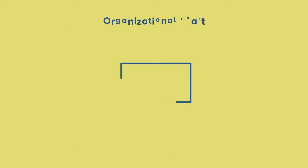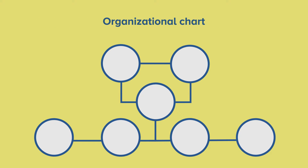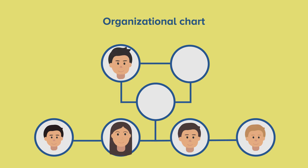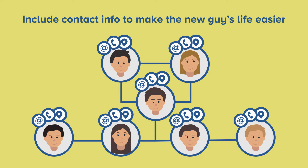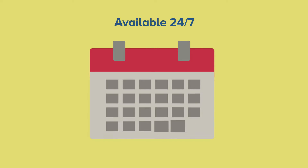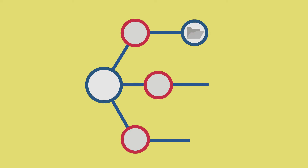An organizational chart, for starters — it should show the structure of your organization and the various job functions. If you include everyone's email, phone, and office location, this serves new hires even better. With eFront Pro, you can make this information available online and 24/7, easily update it when the need arises, and connect each node of your organizational chart with further documentation.